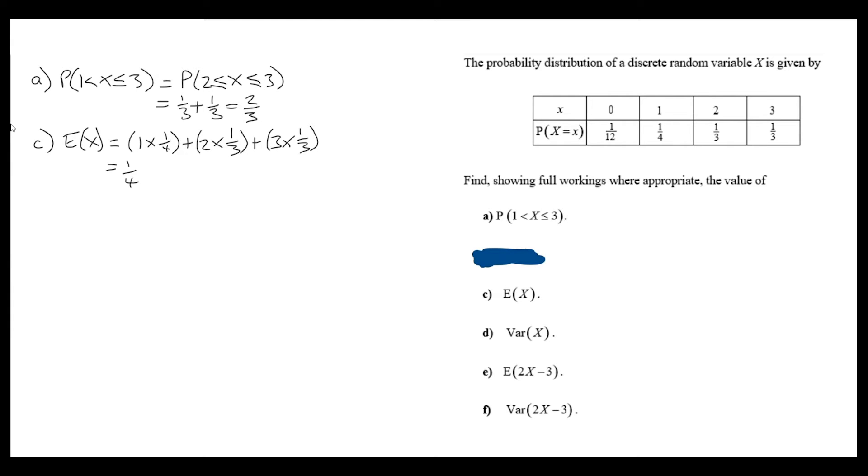Just adding these together, we end up with 23 over 12. It's fine to leave this as an improper fraction. It's going to be used in a calculation later on.